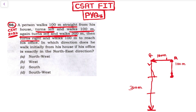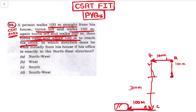Then he turns right. His left hand is this side, so his right is this side. He turns right and walks 100 meters to reach his office. So this is the office.